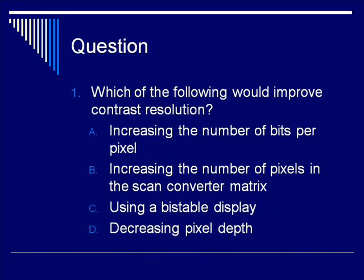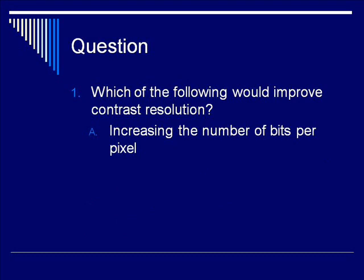Let's pause for a question. Which of the following would improve contrast resolution? A: Increasing the number of bits per pixel. B: Increasing the number of pixels in the scan converter matrix. C: Using a bi-stable display. Or D: Decreasing pixel depth. You may pause to decide on your answer. The answer is A — increasing the number of bits per pixel.